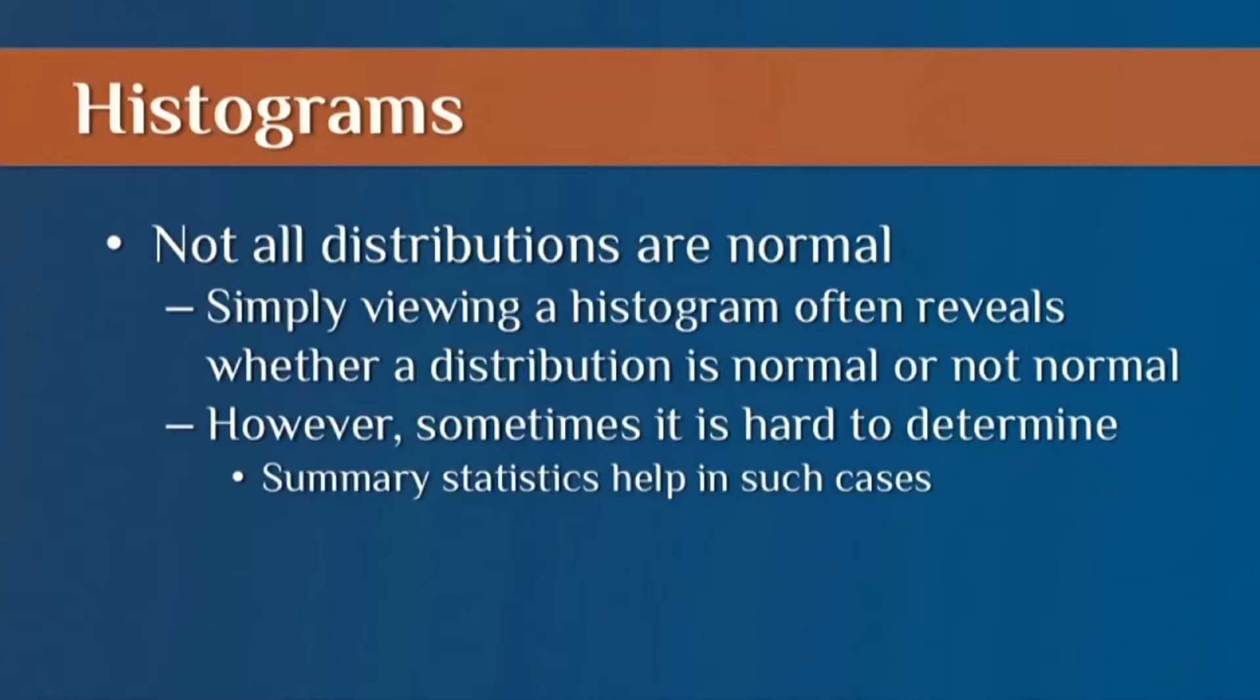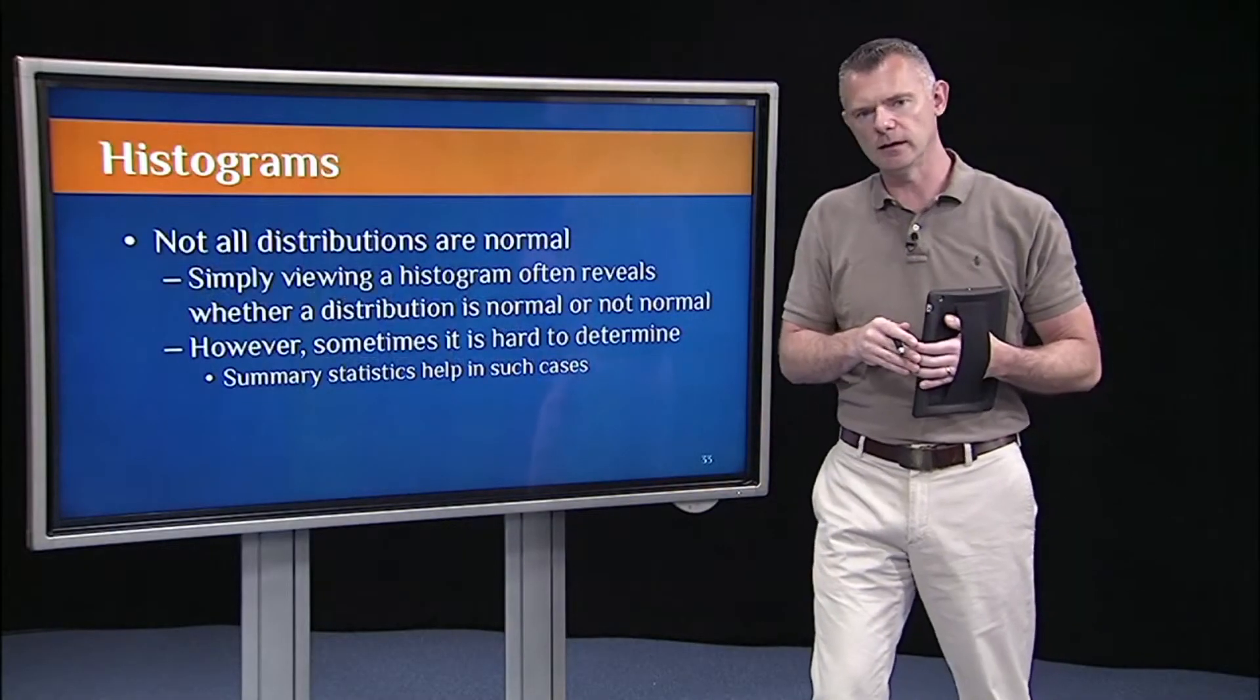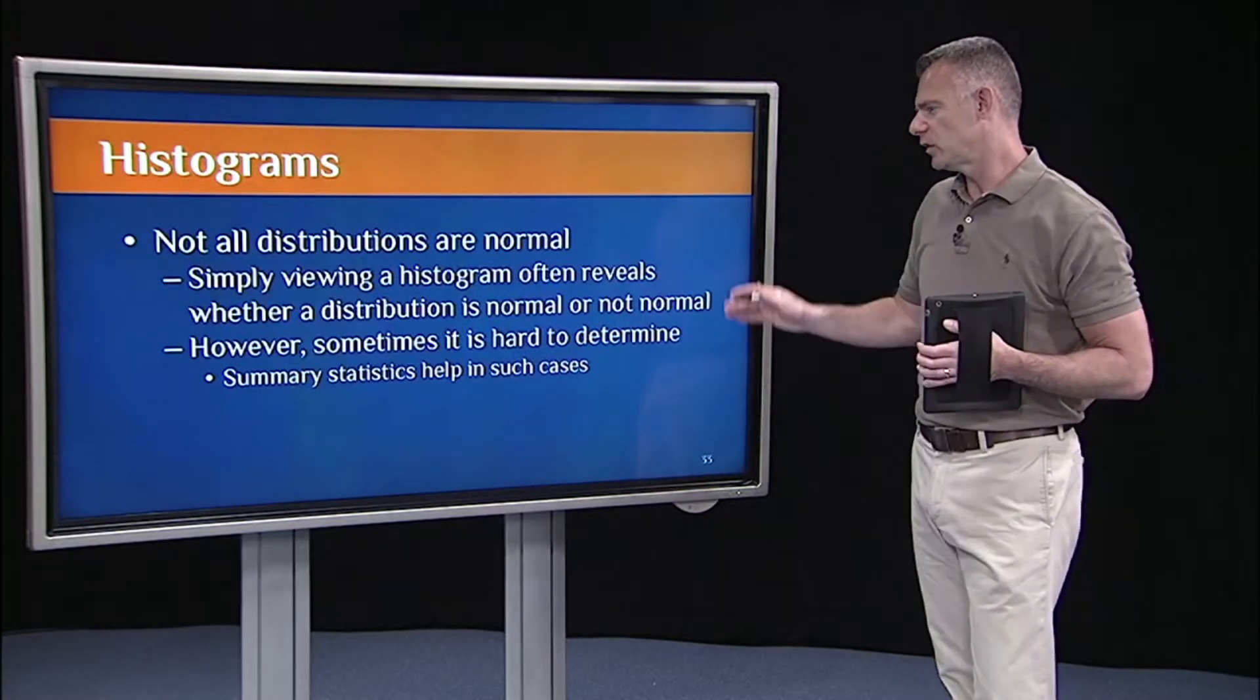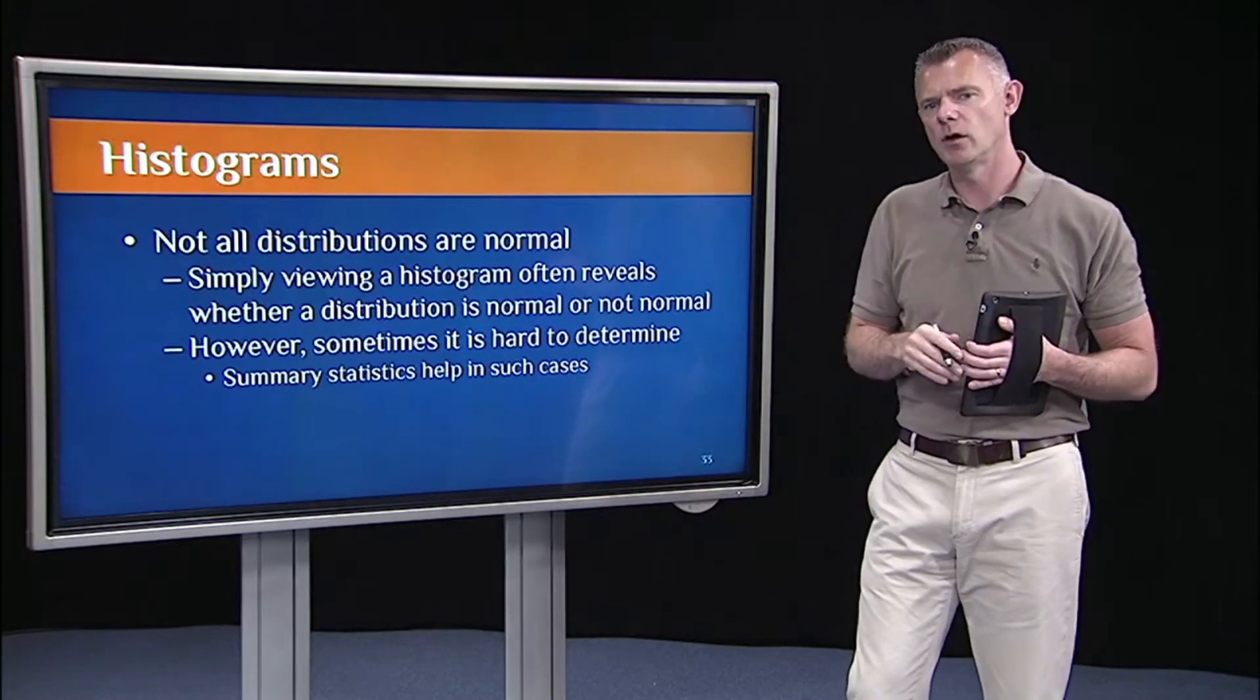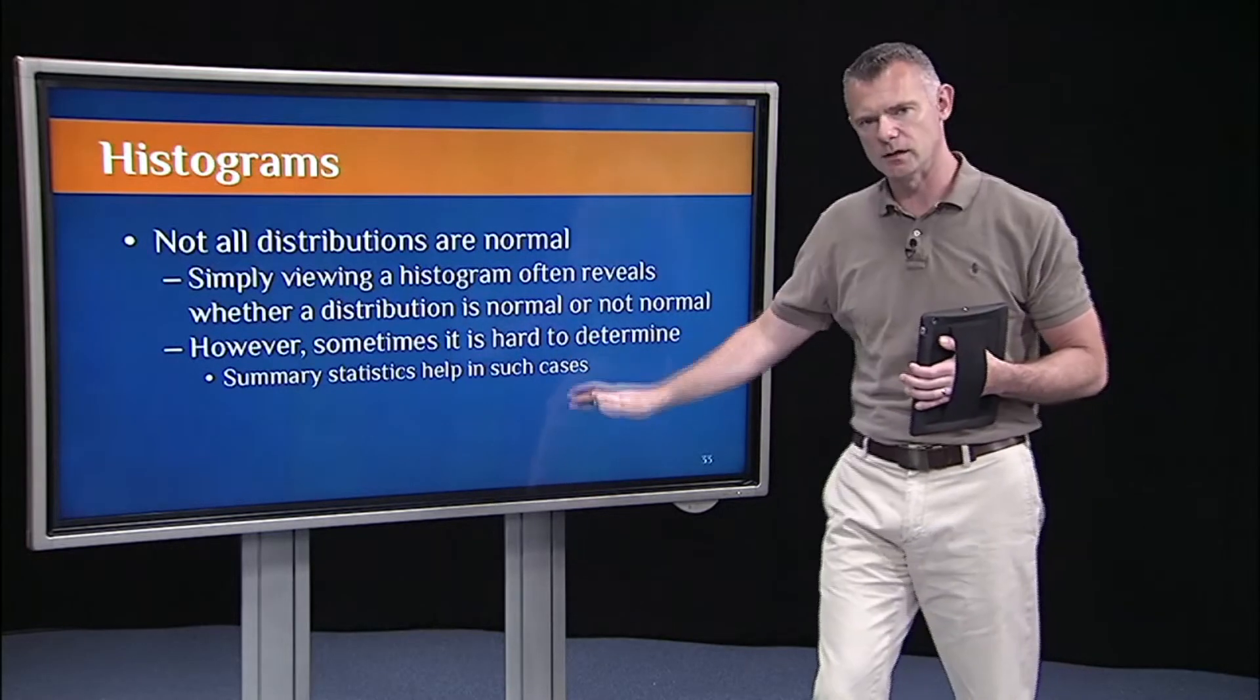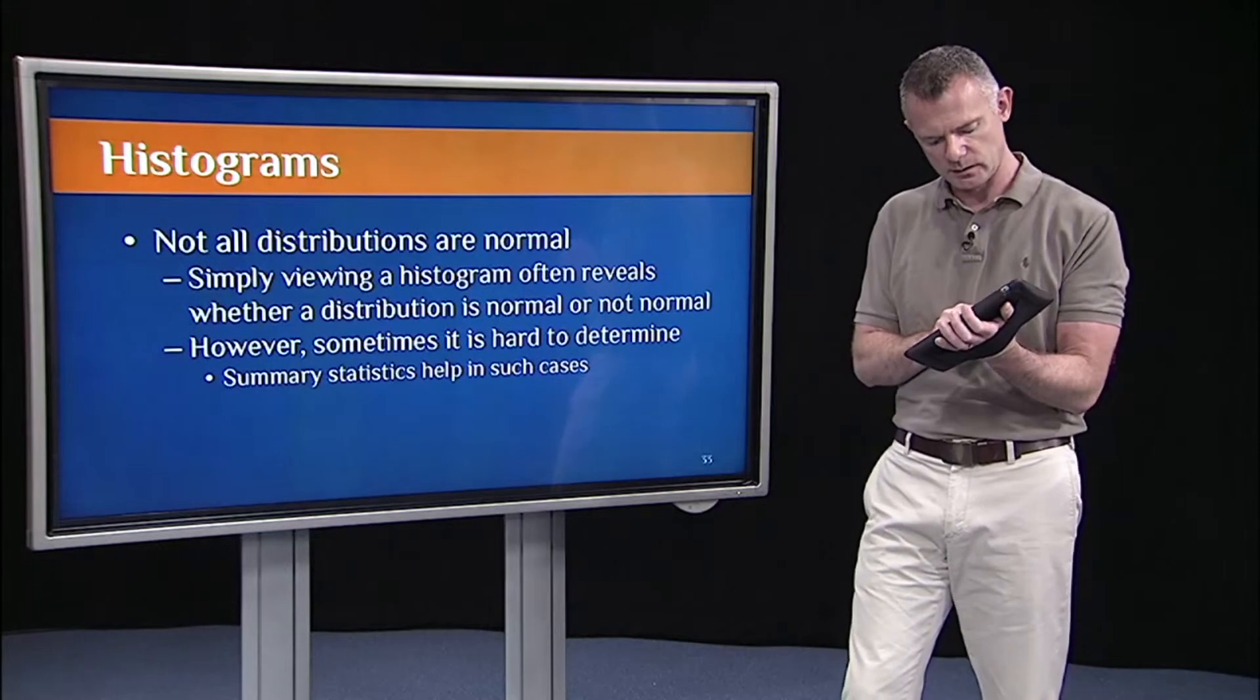So simply viewing a histogram often reveals whether it's not normal. You might have a positive skew. You might have a negative skew. You might have something that's bimodal. You might have something that looks completely out of whack, not normal at all. Sometimes it's hard to determine just by looking at the histogram and it's a judgment call. There are no hard and fast rules about this. So in that case, summary statistics will help. And we'll talk more about that in the next lecture on summary statistics.